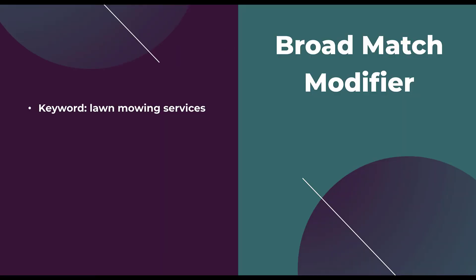There is one other match type I want to cover that some of you who've been doing this for a while might recognize — broad match modifier. The broad match modifier keyword uses plus marks within the keyword, where the plus can be in front of all, some, or one of the words, and those were meant to be anchors. Google actually did away with broad match modifier and rolled it into the phrase match functionality. You can still have broad match modifier keywords active and they will operate like phrase, but you can't create any new ones or edit existing broad match modifier keywords anymore.